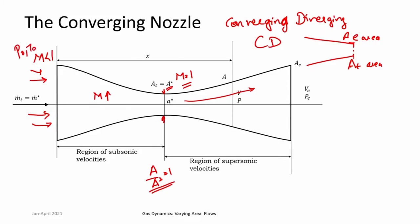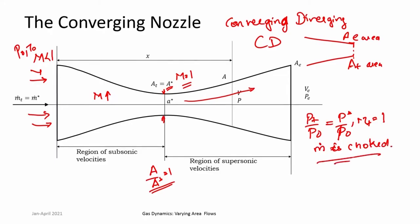Given a certain P₀ and T₀, if the pressure ratio P_t/P₀ equals P*/P₀, then the Mach number at the throat becomes equal to 1, and the mass flow rate is choked. You must understand choking in proper context: if P₀ and T₀ are fixed and the mass flow rate is choked, then whatever downstream conditions exist, they cannot change the mass flow rate. But if you vary P₀, your mass flow rate will increase linearly.